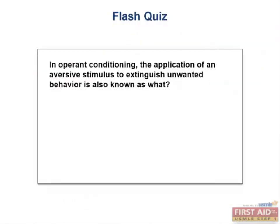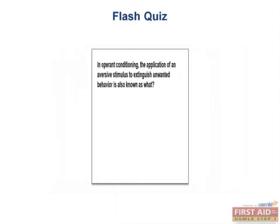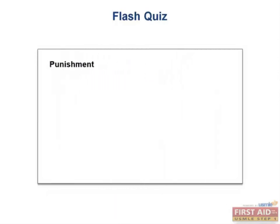Flash quiz: In operant conditioning, the application of an aversive stimulus to extinguish an unwanted behavior is also known as what? The answer is punishment, because an aversive stimulus is being applied to get rid of a behavior. Remember, don't get this confused with negative reinforcement, which is removing an aversive stimulus to promote a behavior.